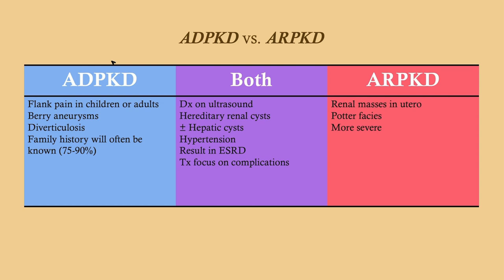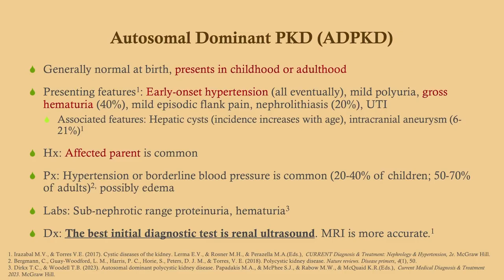ADPKD — we used to call this adult polycystic kidney disease, but that's not a good term because many patients present before adulthood. It can present in childhood or adulthood, which is very different from the recessive form. Presenting features really depend on the patient — they may have one, all, or none — but early onset hypertension is a big one because it's so easy to identify.